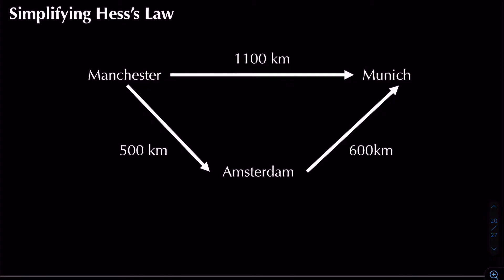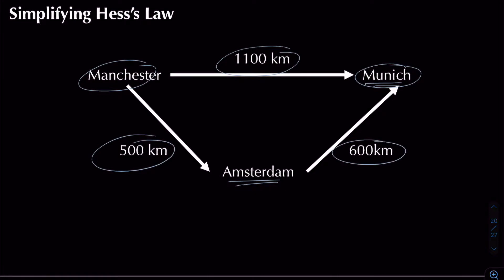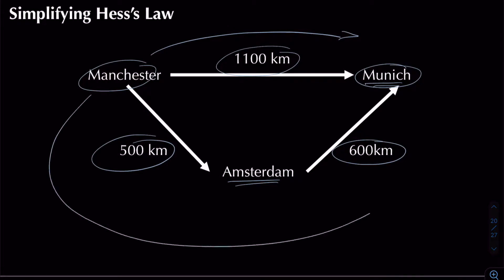Starting with a simplified example of Hess's law: consider a journey from Manchester to Munich, which has a distance of 1100 kilometers. If instead you stop off at Amsterdam and then go to Munich, you'd have 500 kilometers plus 600 kilometers. So route one — Manchester to Munich directly — equals route two — Manchester to Amsterdam to Munich — and both give the same total distance.